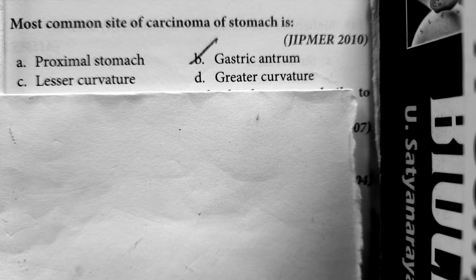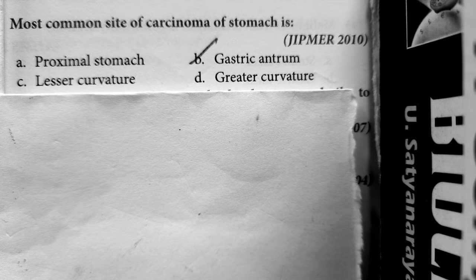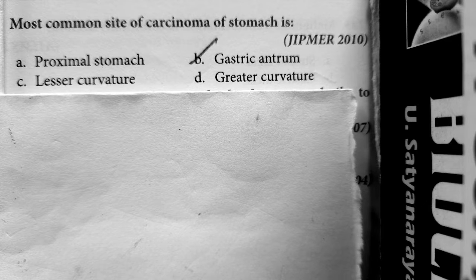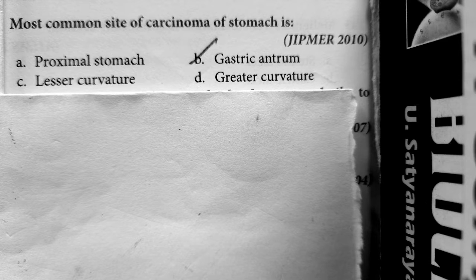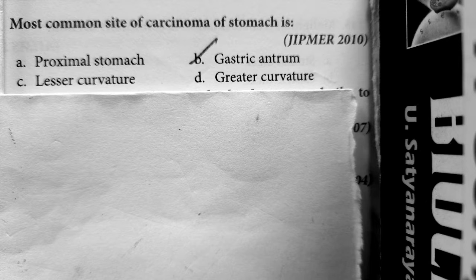Hello friends, let us now learn about some MCQs in stomach and duodenum. Question 1: The most common site of carcinoma stomach is the gastric antrum, but in pernicious anemia, the most common site of carcinoma stomach is the fundus of the stomach.